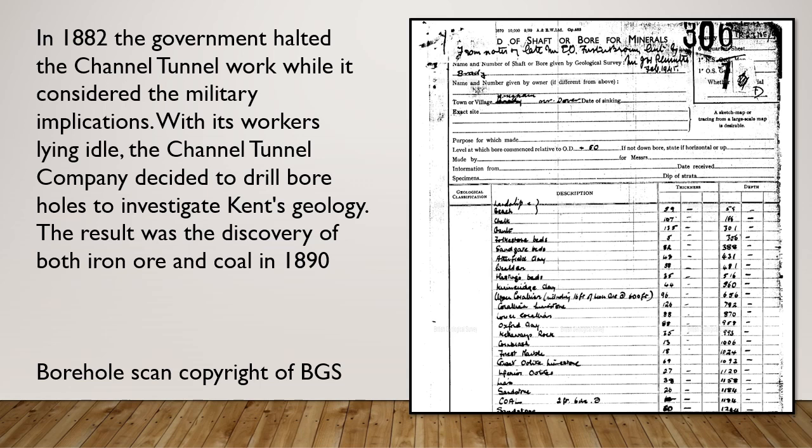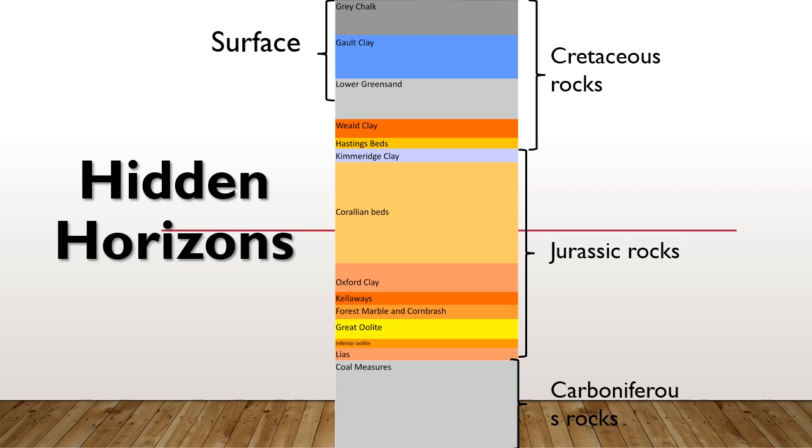One particular borehole was made in the late 1800s after operations to build a channel tunnel between Britain and Europe were suspended due to security fears. Because the workers didn't have anything else to do, they were set to work investigating the geology. They did some boreholes and in one they discovered carboniferous coal underneath the surface rocks at Folkestone, which led to the development of the Kent coal mining industry.